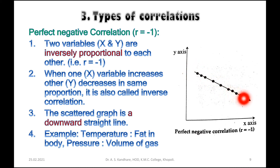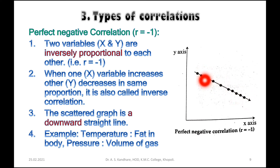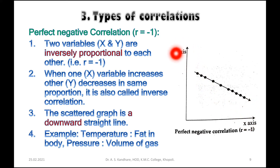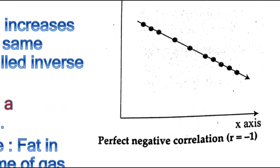You can see this straight line with dots on the line and the direction of the arrow going downward. The x variable is on the x-axis and the y variable is on the y-axis. This is a perfect negative correlation represented by r equals minus one.